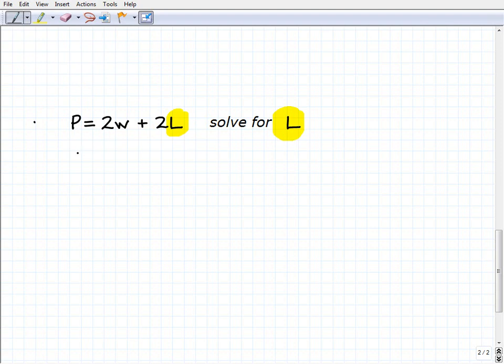Once again, if you're struggling, when you're starting out it's okay to substitute numbers. Let's just think of some numbers here so you can see the steps. So this would be 12 equals 2 times, W could be 3, plus 2 times L. So really, this is like a two-step equation. This would be 12 equals 6 plus 2L.